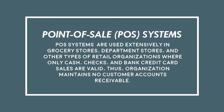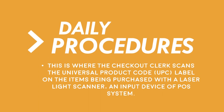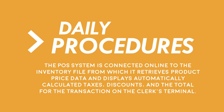For point-of-sale systems, these are used extensively in grocery stores, department stores, and other types of retail organizations where only cash, checks, and bank credit card sales are valid. Thus, the organization maintains no customer accounts receivable. For daily procedures, the checkout clerk scans the universal product code (UPC) label on the items being purchased with a laser light scanner. The POS system is connected online to the inventory file, from which it retrieves product price data and displays automatically calculated taxes, discounts, and the total for the transaction on the clerk's terminal.